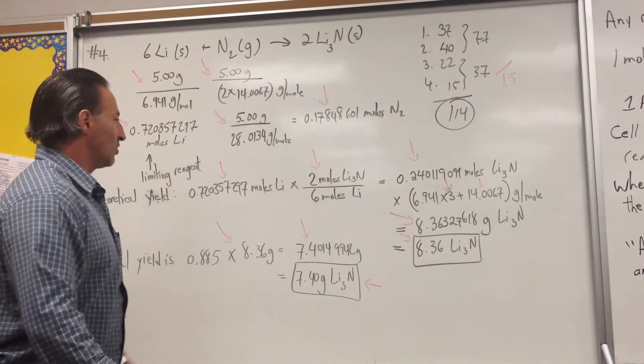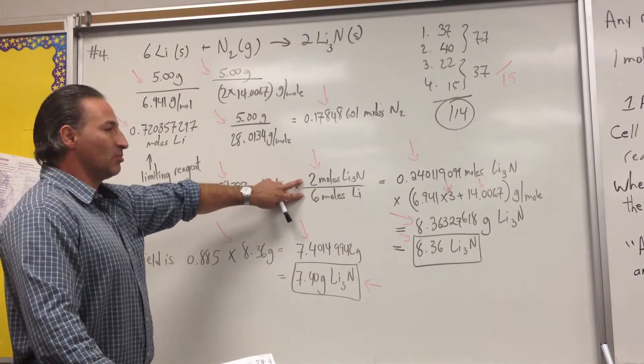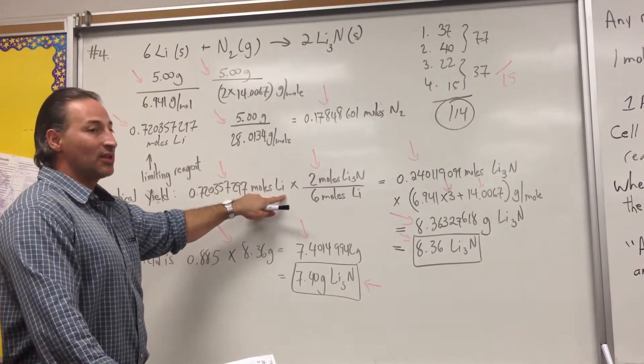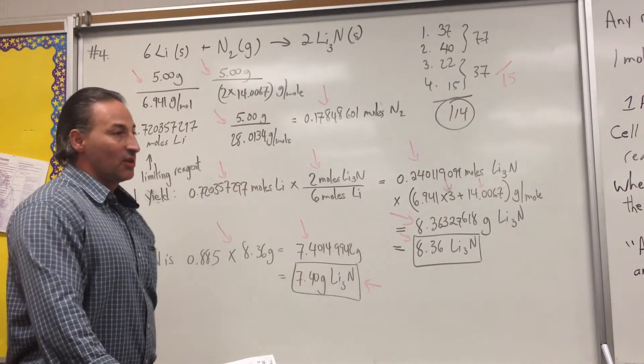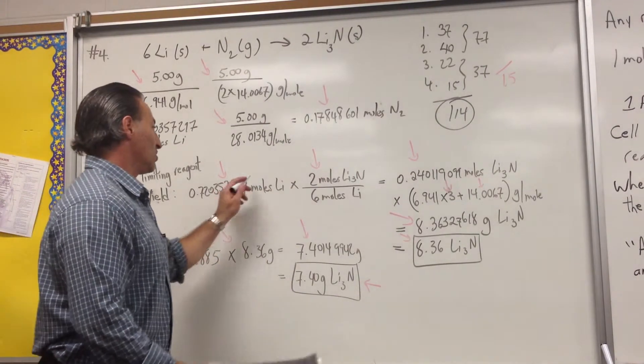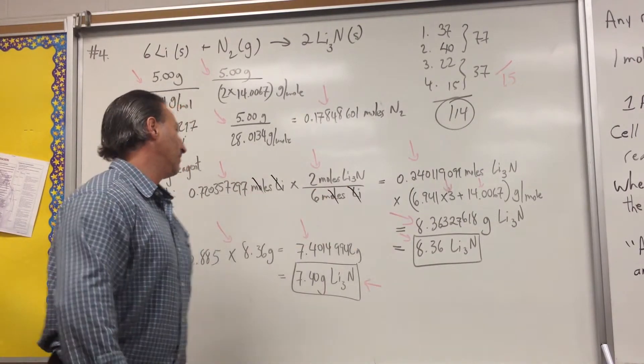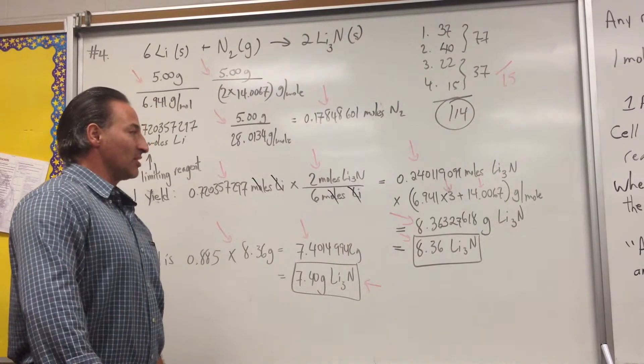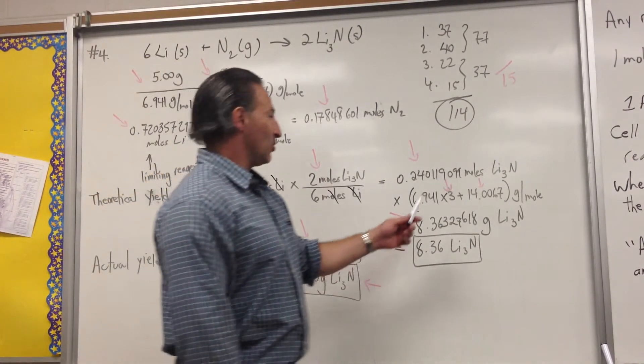So, it's 2 to 6 stoichiometry. How do I choose which one of these two to put? Do I put it 2 over 6 or 6 over 2? I'm trying to eliminate moles of lithium. So, moles of lithium has to appear in the denominator so that I can cancel them. And, we get that we're going to form 0.24 moles of lithium nitride.